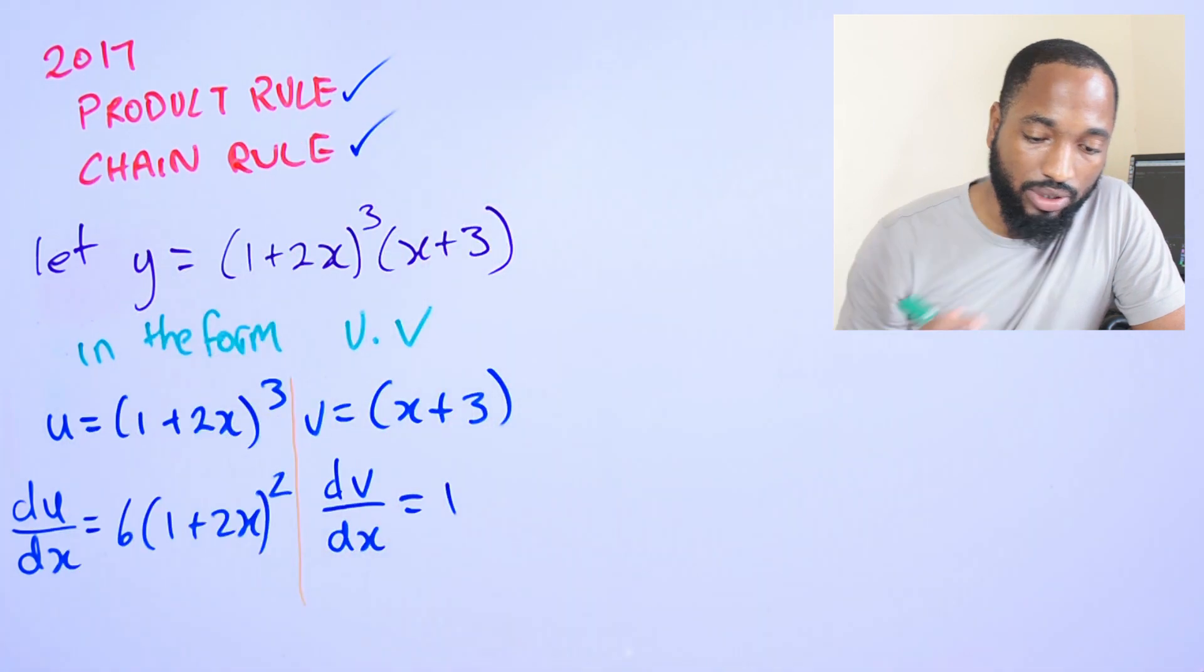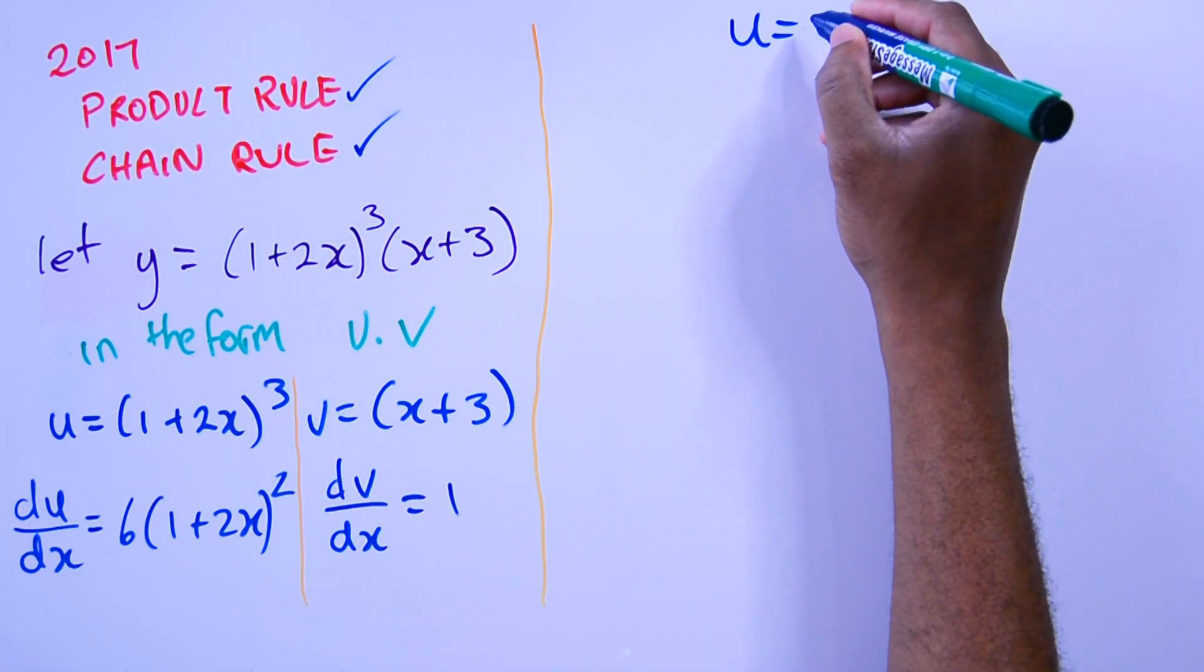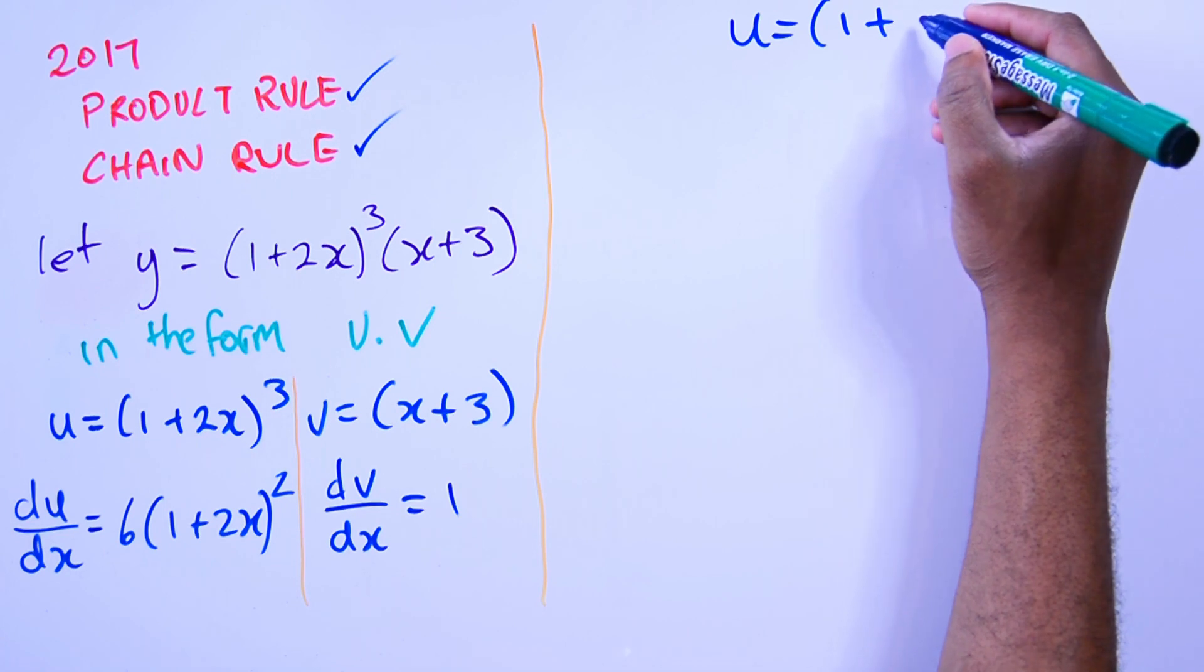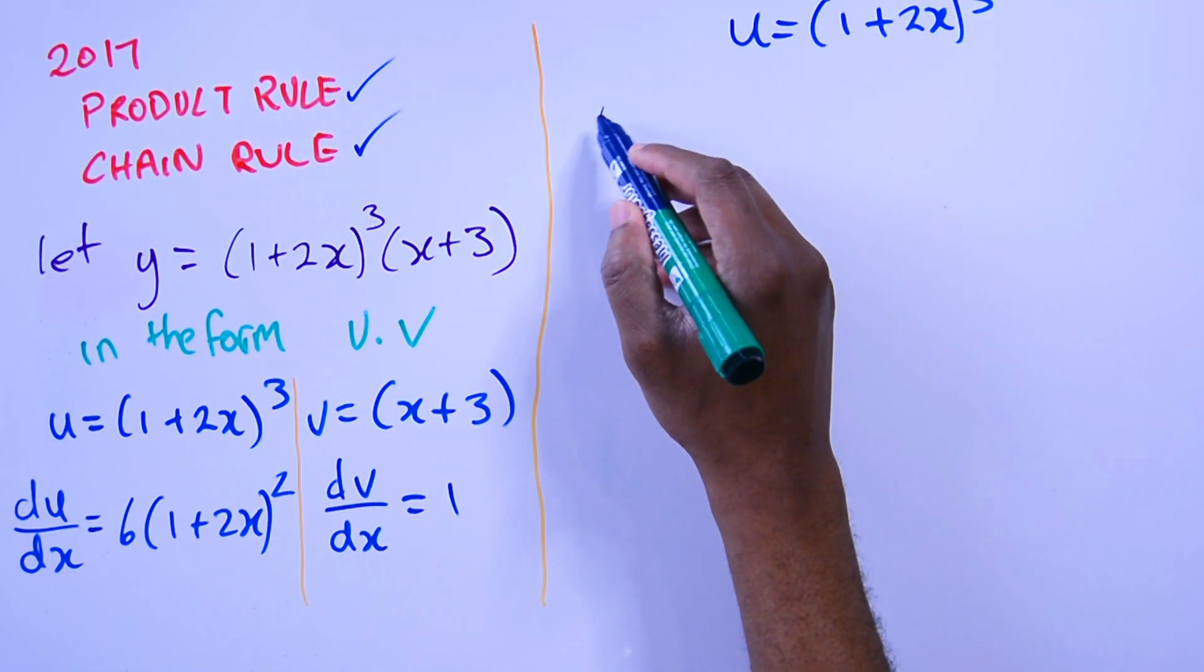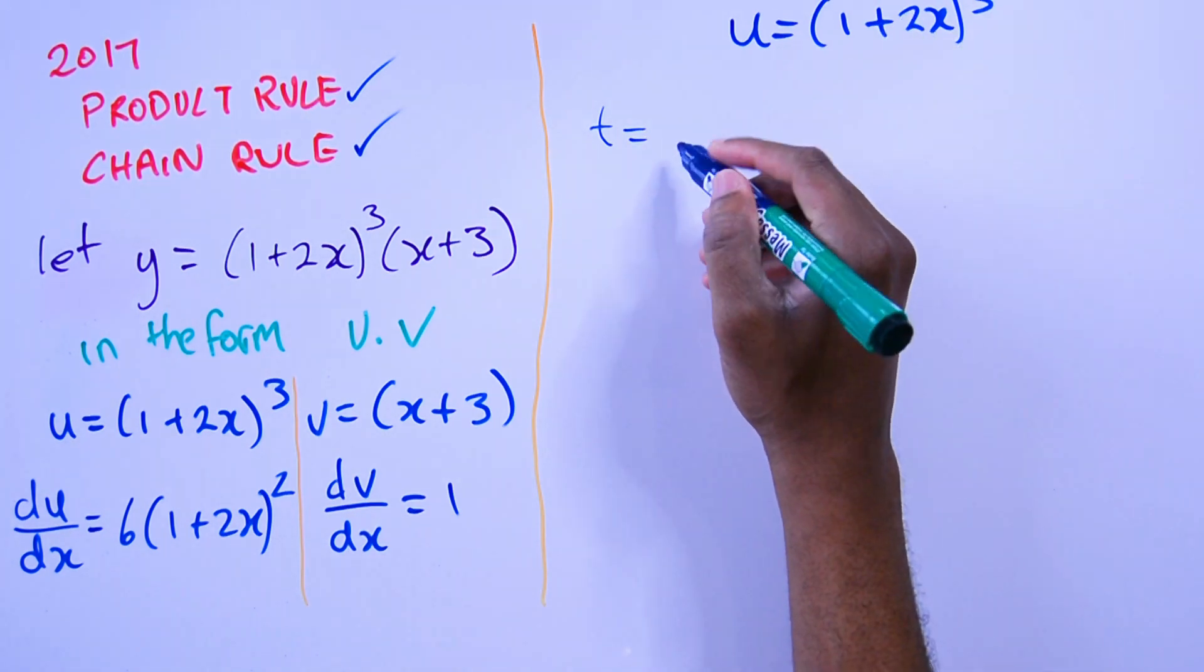This is how you do the chain rule: you'll set u to be (1 + 2x)³. We let a variable be equal to this, the function inside, 1 + 2x.